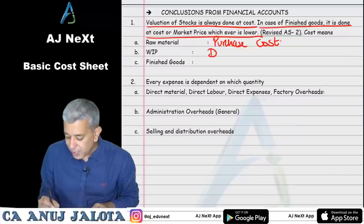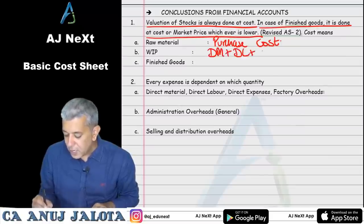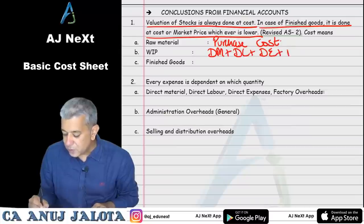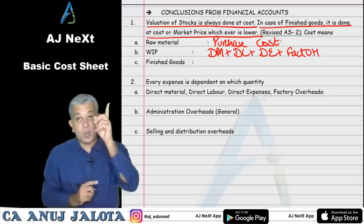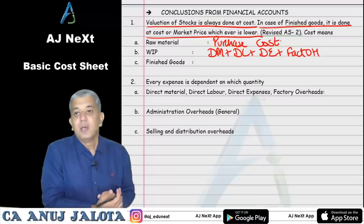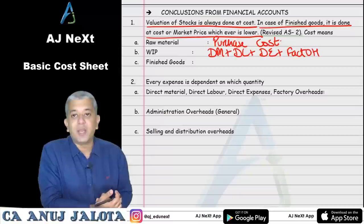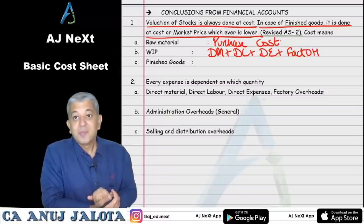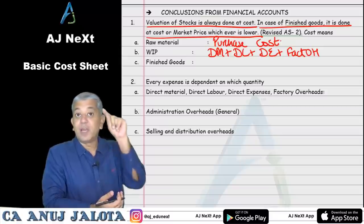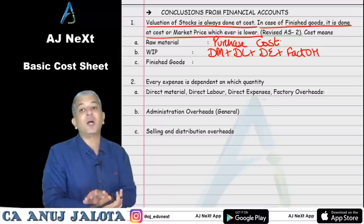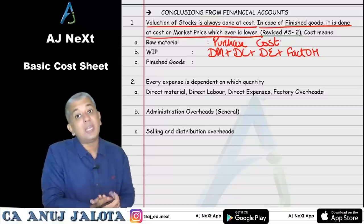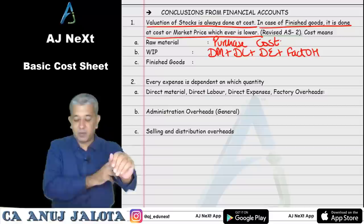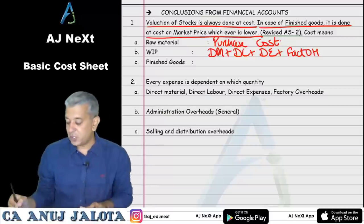For WIP stock valuation, write: direct material + direct labor + direct expenses + factory overhead. Remember, the factory overhead here includes what is excluded in costing — that's the key difference you're now aware of.